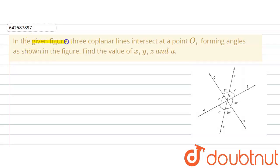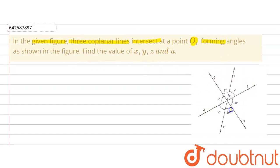The given question says that in the given figure, three coplanar lines intersect at the point O, forming angles as shown in the figure. There are certain angles which are formed: this angle is 90 degrees, this is 50 degrees, this is U, this is Z, this is Y, and this is X. You are supposed to find out the value of X, Y, Z and U.